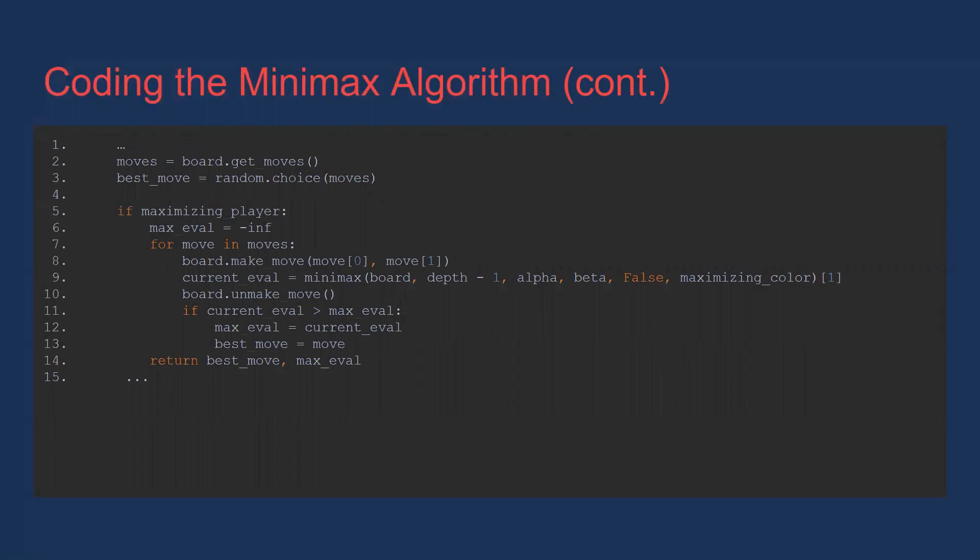Here, we get all of the available moves on the board and initialize the best move to a random value. If we are the maximizing player, then we want to go through each move, see what the game state looks like after the move has been made, then check if the value of the resulting game state is higher than any of the ones that we've seen before. If it is higher, then we update the max eval and the best move variables accordingly. Finally, we return the maximum evaluation along with the best move.